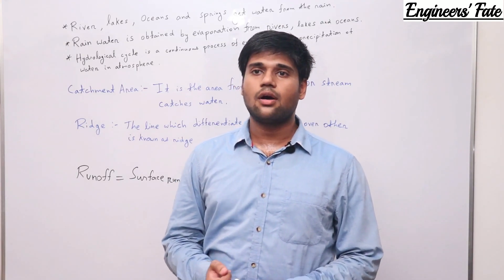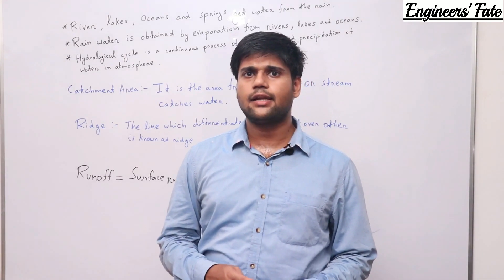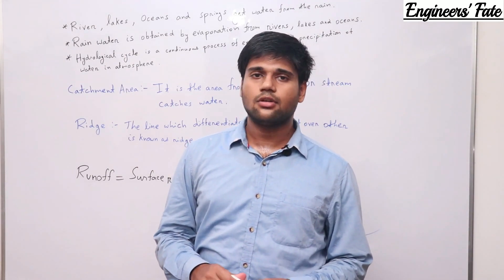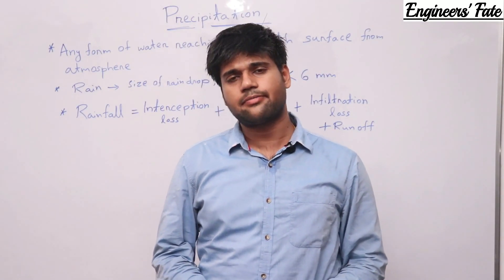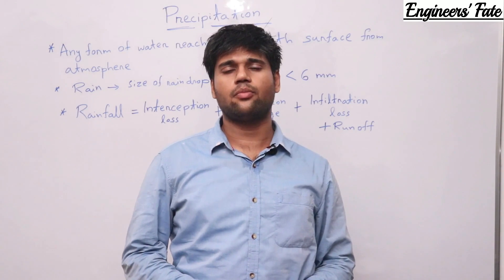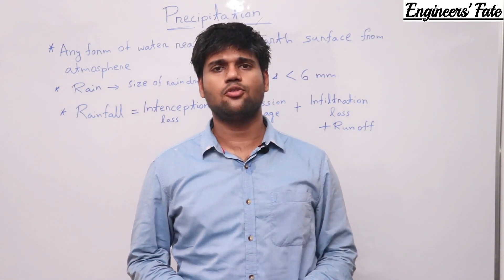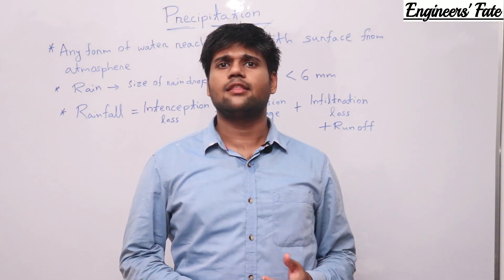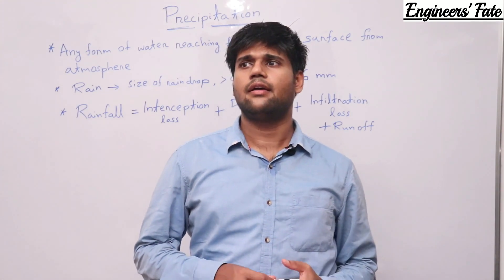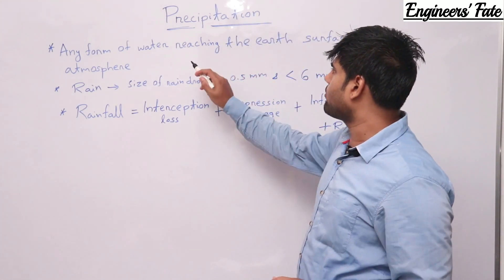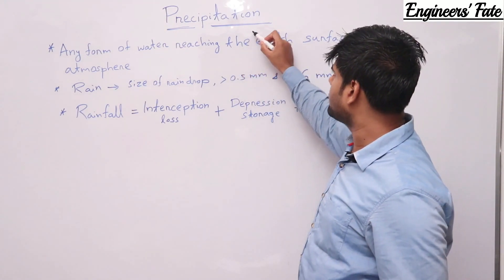Let's move to our main topic: precipitation and rain gauges for today's class. Let's begin with the chapter precipitation. What is precipitation? Any form of water reaching the ground surface from the atmosphere is known as precipitation.